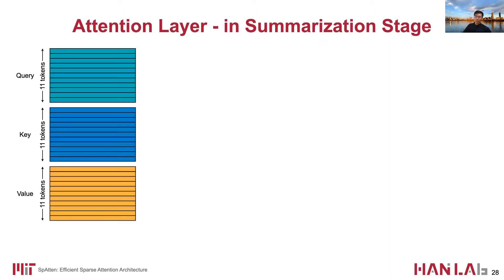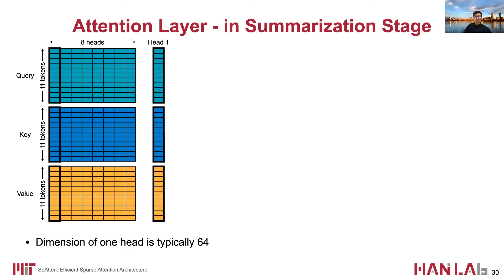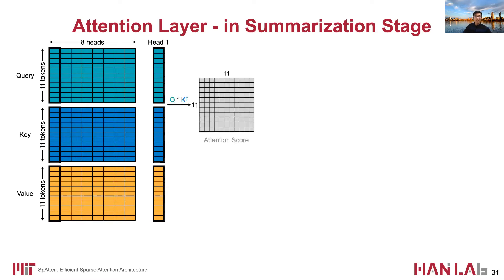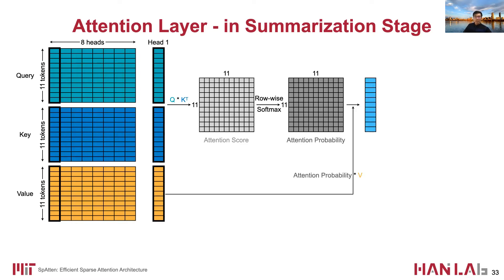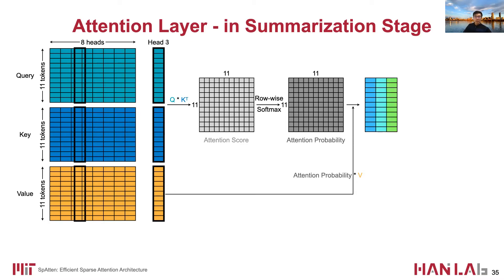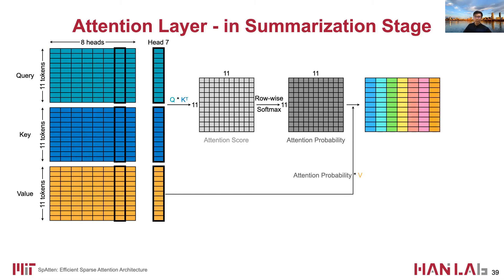Now let's look at the details of the attention layer. In the summarization stage, QKV are matrices — in this example we have 11 tokens. The QKV are first chunked into multiple heads, each typically with feature length 64. In each head, the query is multiplied with the transpose of the key matrix to generate an attention score matrix. The intuition is that each token is assessing the relevance of all other tokens to itself, giving an 11×11 attention score matrix. Then a row-wise softmax is applied to produce the attention probability matrix. Finally, we compute attention probability times the value matrix to get the output of one head, and do the same for all heads, concatenating results along the feature dimension.